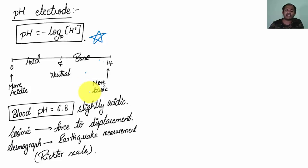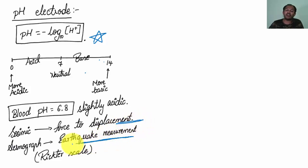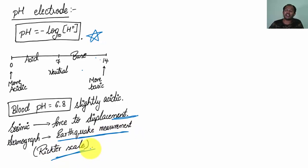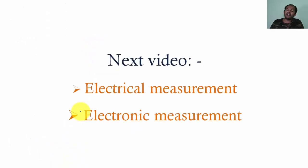Seismic measurement is force-to-displacement conversion. A seismograph is used for earthquake measurement with the help of the Richter scale. In this video, mechanical measurements have been discussed. In the next video, we will talk about electrical measurements and electronic measurements.